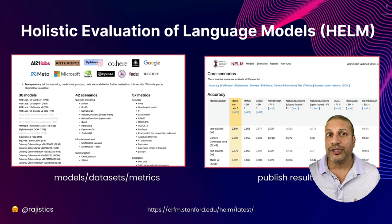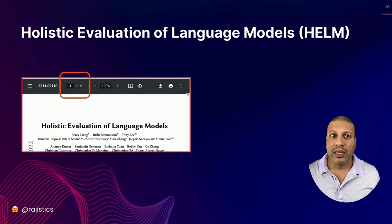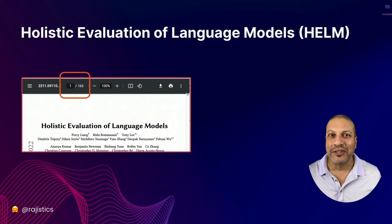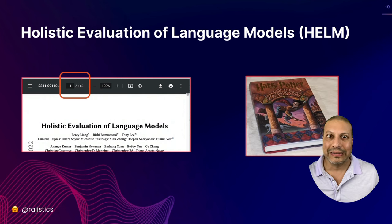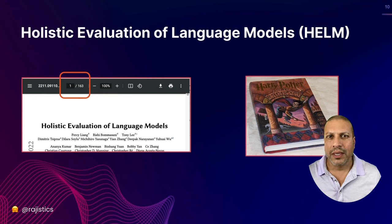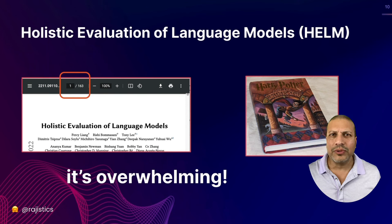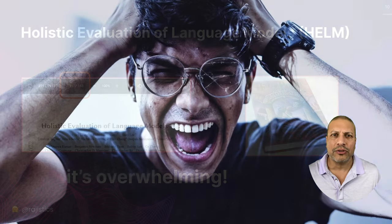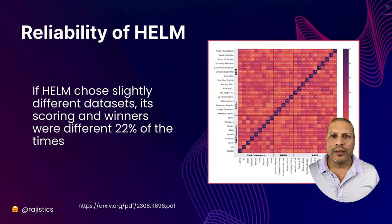If you look at just the HELM paper itself — not even all the results — it's pretty voluminous. It's 163 pages, literally bigger than a Harry Potter book. Most data scientists are overwhelmed when they try to figure out how to evaluate their large language models.